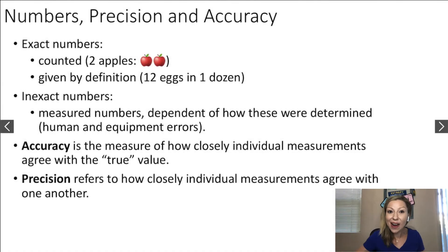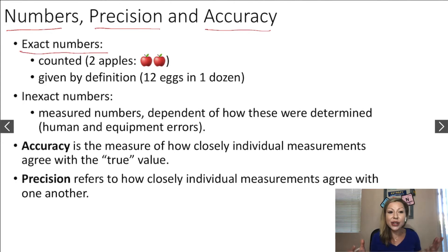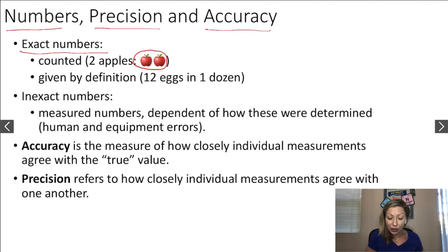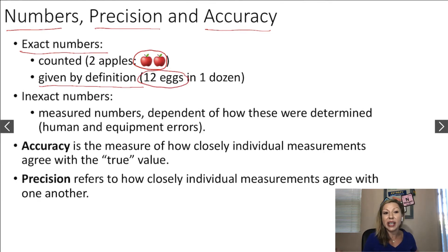Let's talk a little bit more about numbers, precision, and accuracy. There are two types of numbers: exact numbers, which are the type of numbers you can count exactly. For example, here I have exactly two apples, or I can count five fingers on my left hand. There are also exact numbers given by definition — for example, one dozen eggs is just 12 eggs, and that is also an exact number.